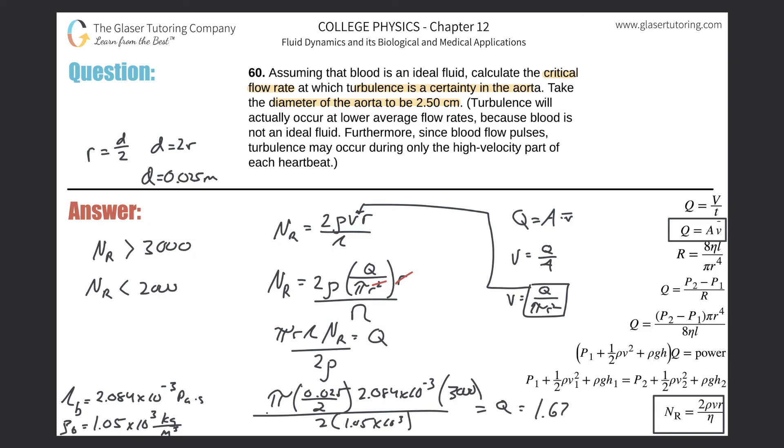We get a value of—no, sorry—1.17 times 10⁻⁴ cubic meters per second. That's the flow rate. If you need it in other units, feel free to convert. Thanks for tuning in, please subscribe, and we'll see you next time.